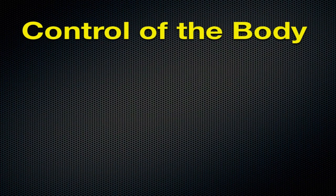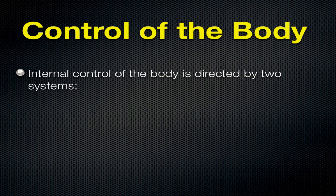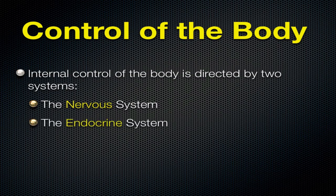So let's start with control of the body. Internal control of the body is directed by two systems. There's a bunch of stuff that's happening inside of your body right now, and it needs to be controlled, and there are two main systems that control that. Number one, the nervous system. And number two, the endocrine system. These are very important systems - definitely up there in levels of importance.